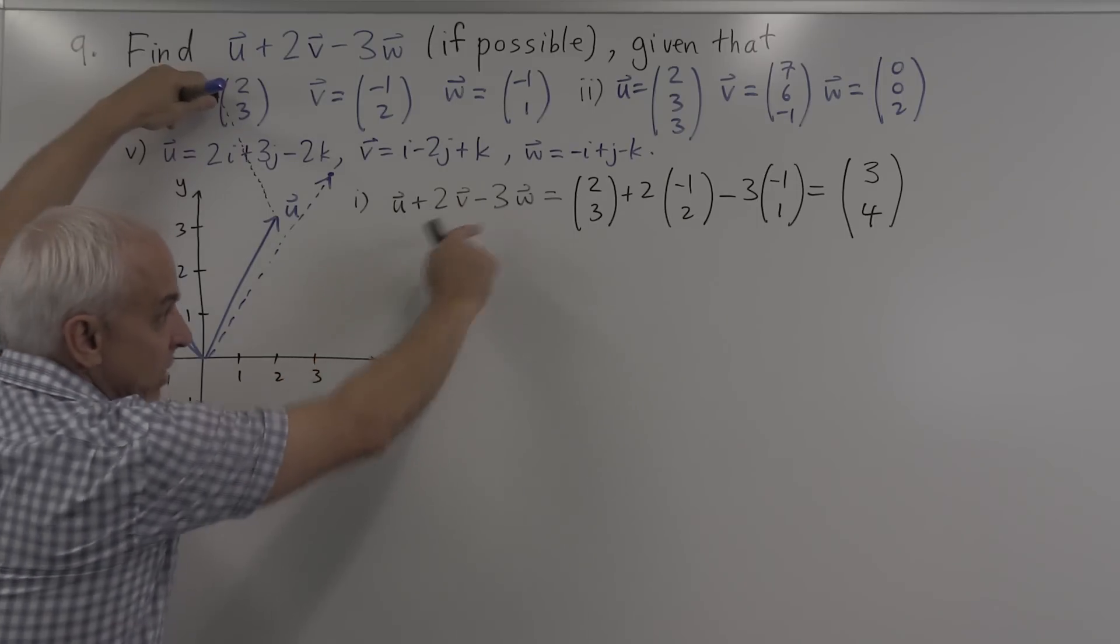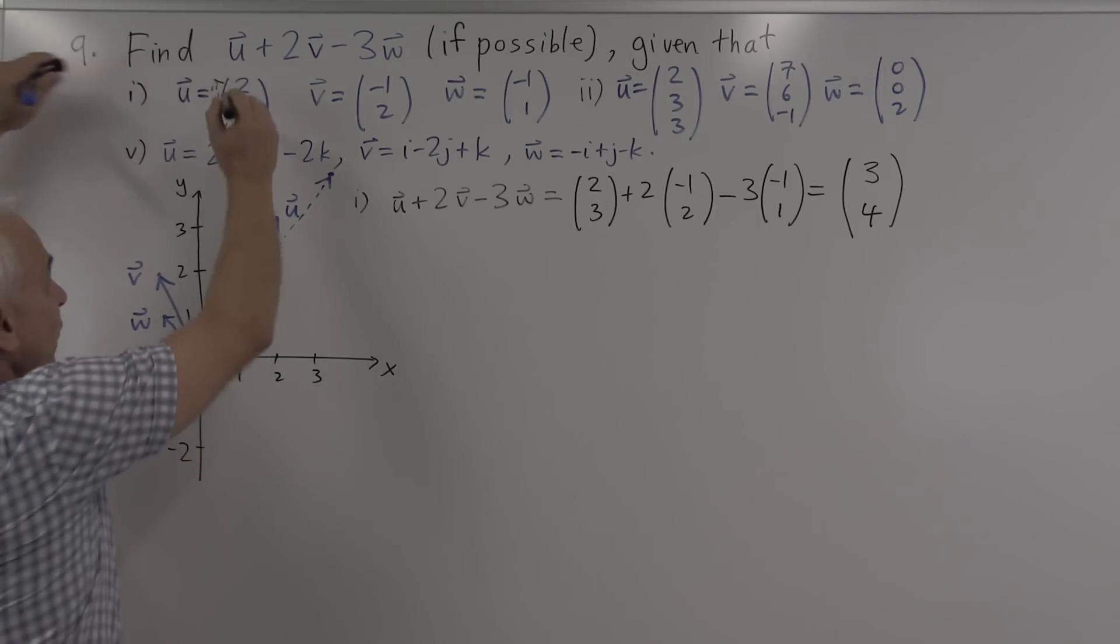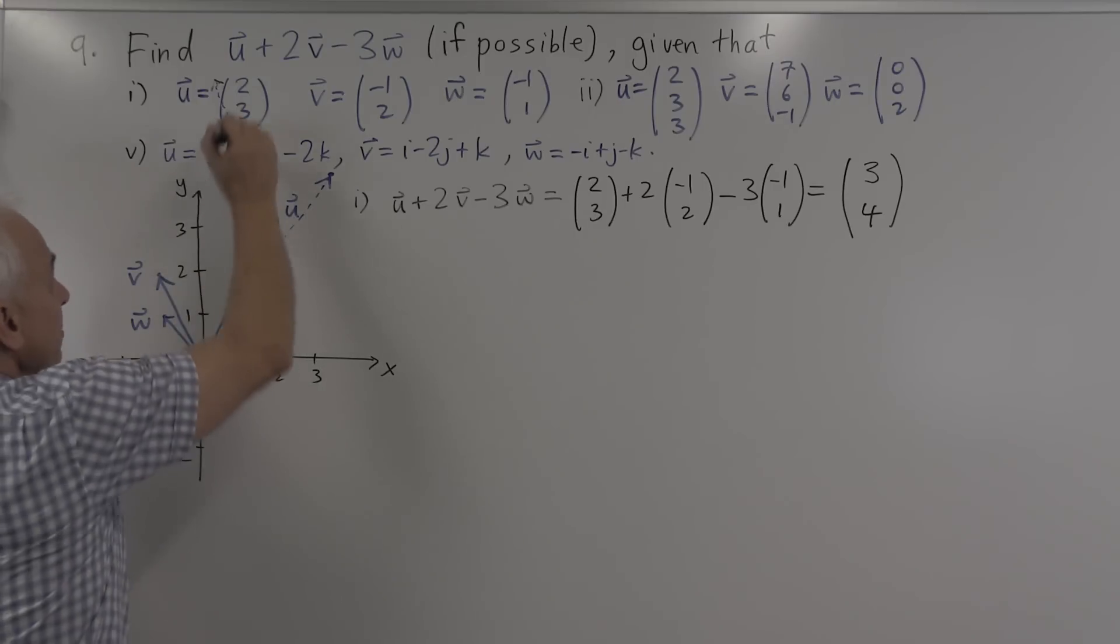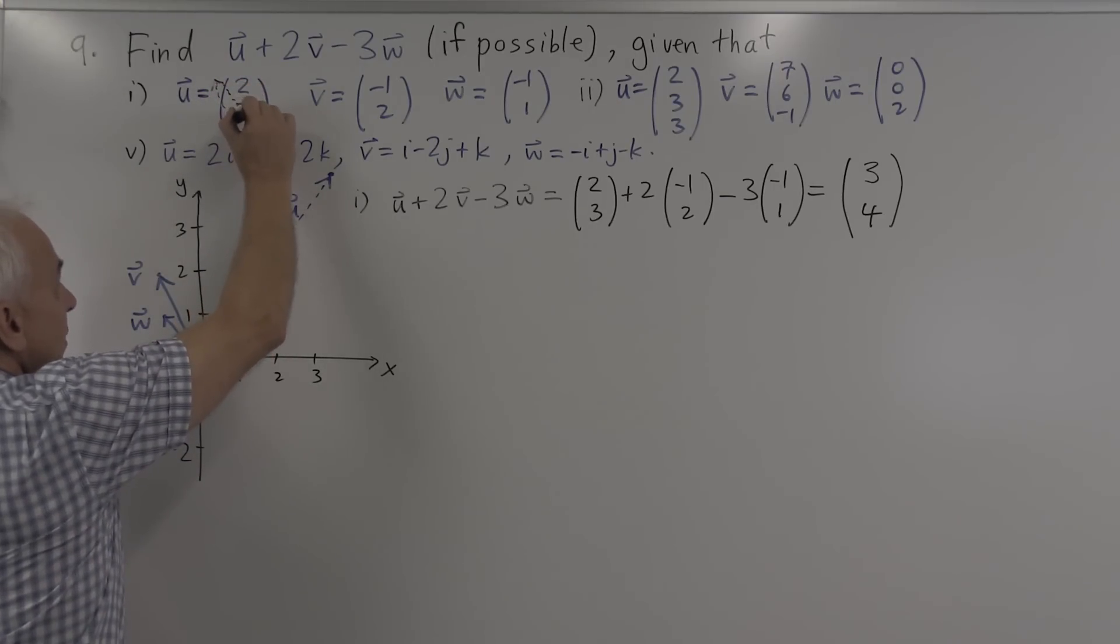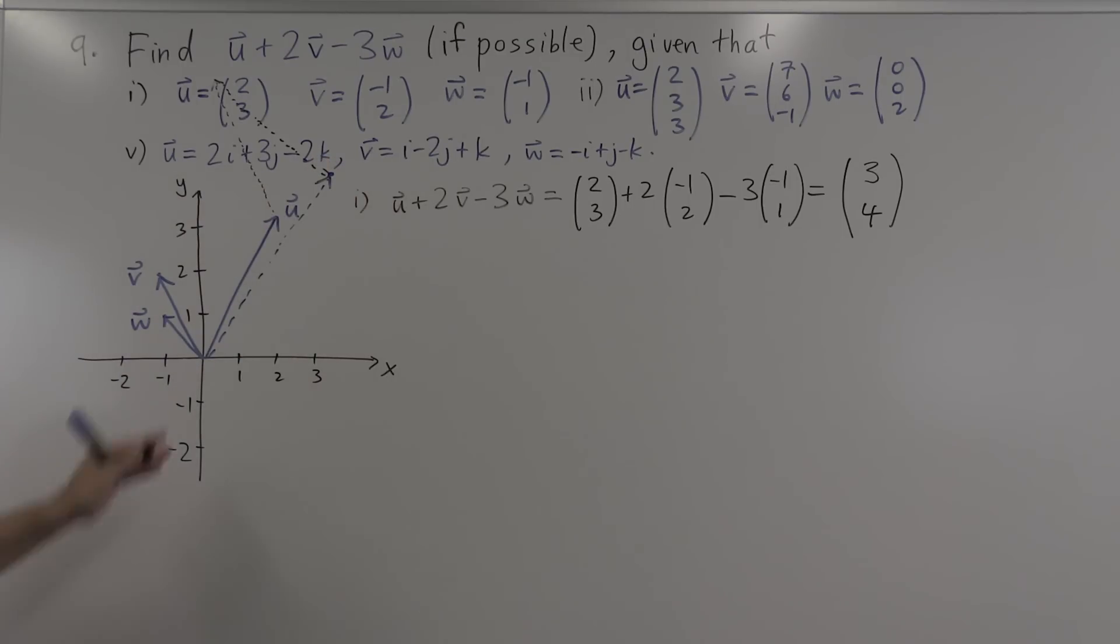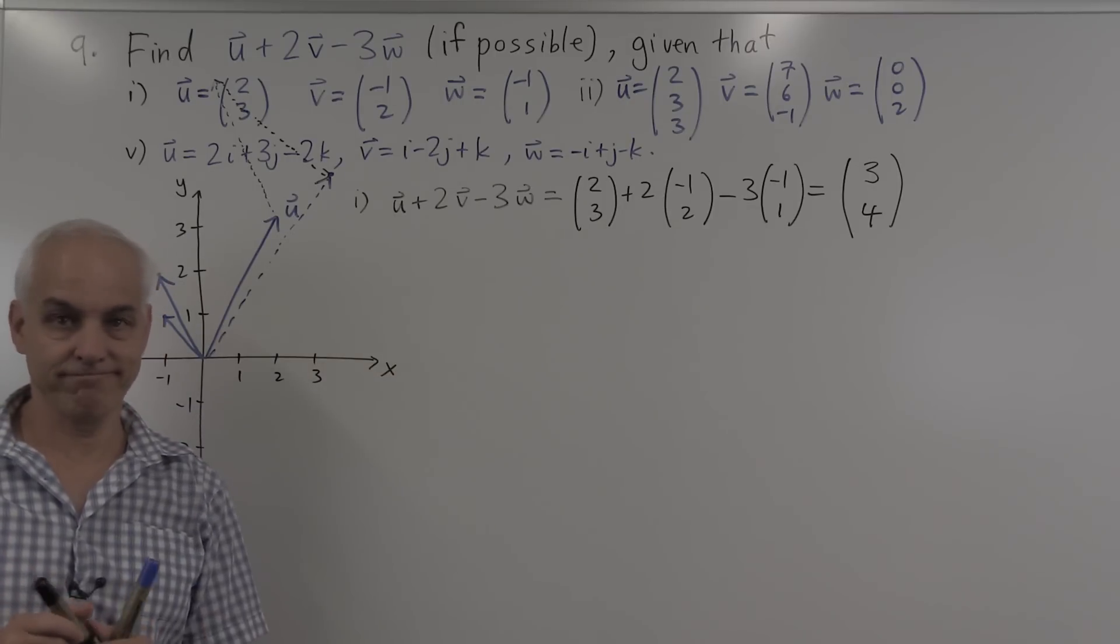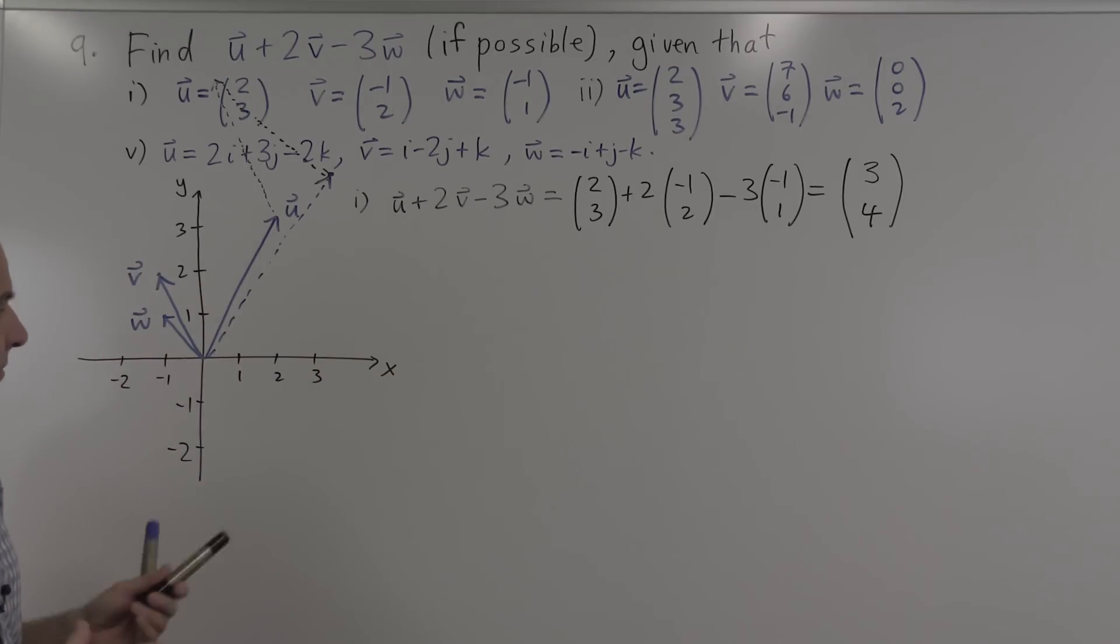And now, if we subtract 3 times w, well, w was here, and we're subtracting 3 of those. So we have to go in this direction, but backwards. So 1, 2, 3. You can see that we'd end up pretty close to what the answer's supposed to be. So there's a solution for the first problem.